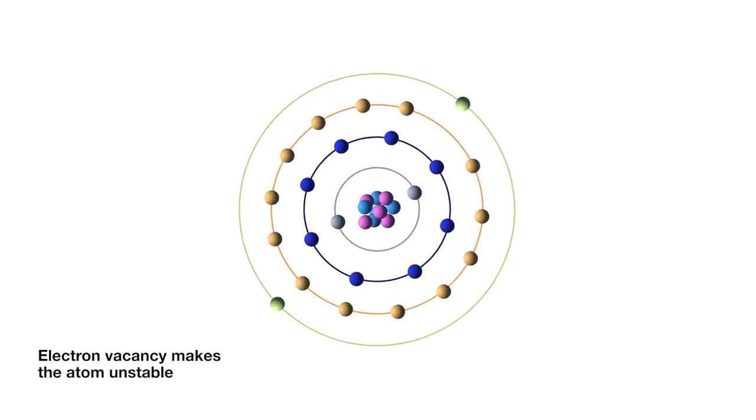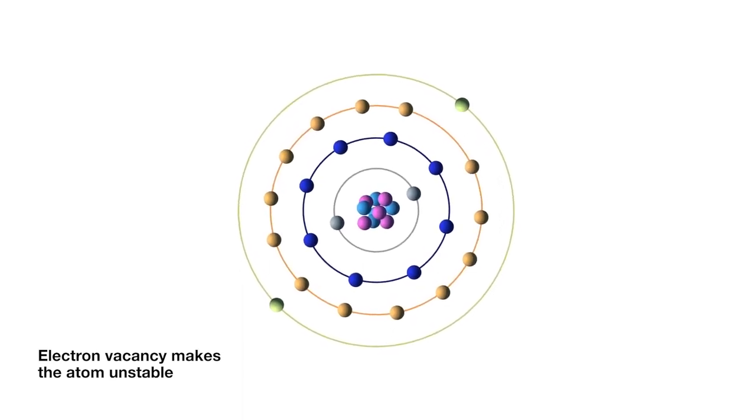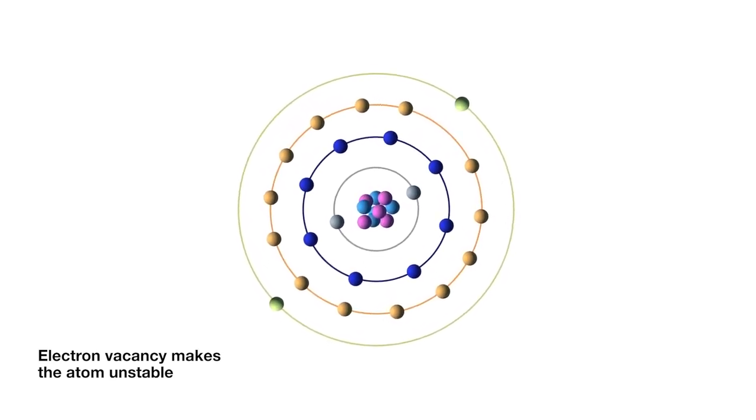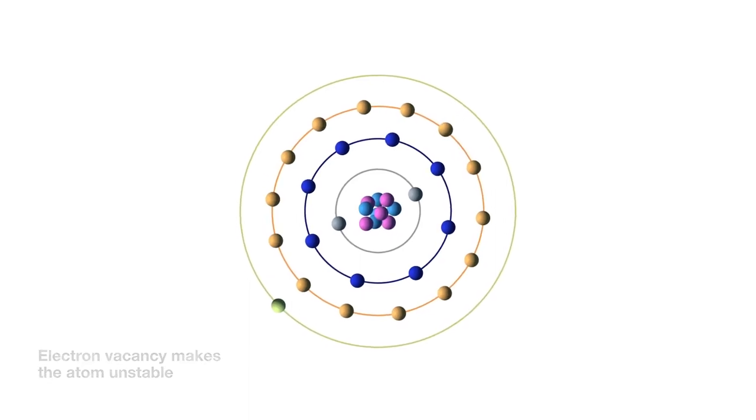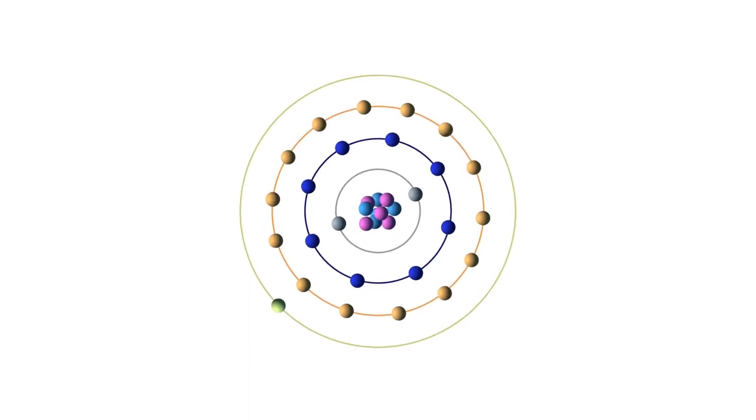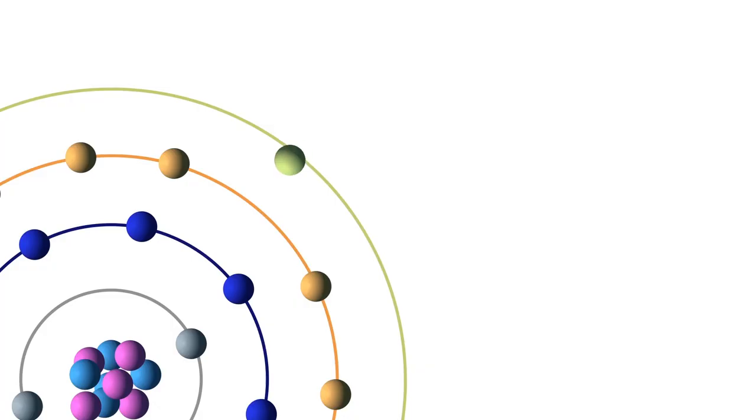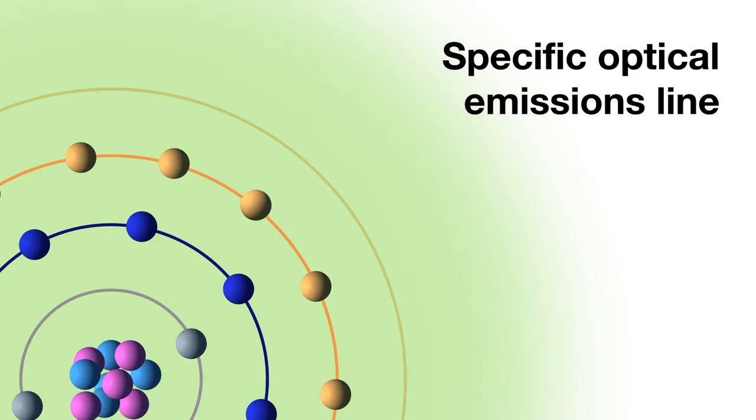The ejected electrons create a vacancy, making the atom unstable. To restore stability, electrons from higher orbits further away from the nucleus drop down to fill the vacancy. The excess energy released as the electrons move between the two energy levels or shells is emitted in the form of element-specific light or optical emission. Every element emits a series of spectral lines corresponding to the different electrons' transitions between the different energy levels or shells. Each transition produces a specific optical emission line with a fixed wavelength or energy of radiation.